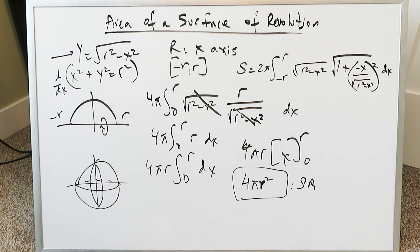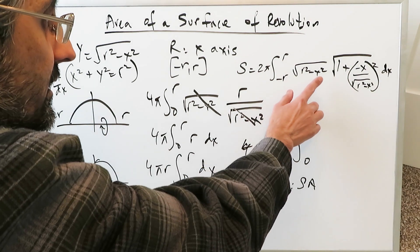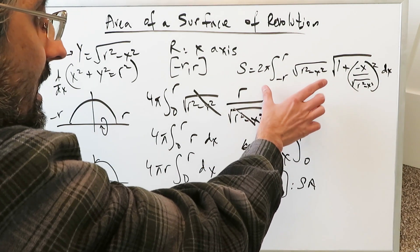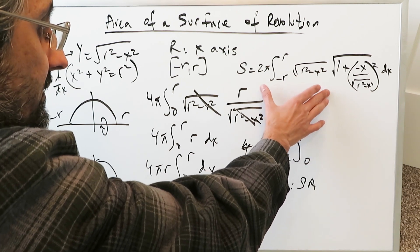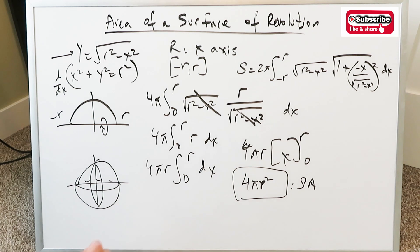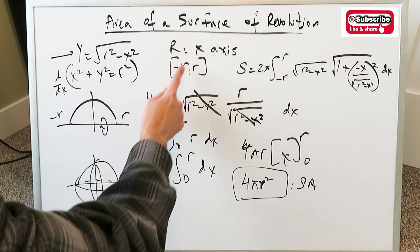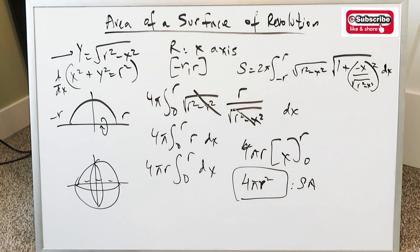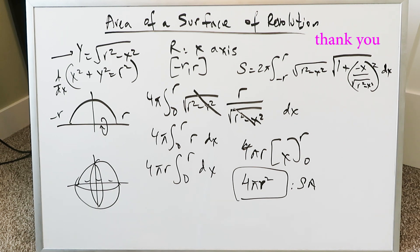That brings us to the conclusion of this video. Remember the differences: in the last example, rotation was on the x-axis, so everything was in terms of dx with intervals along the x direction. With the previous two examples, you had integration with respect to dy, rotation around the y-axis, and intervals along the y-axis as well. That's all I wanted to present in this video. Thank you for watching. Have a good day.